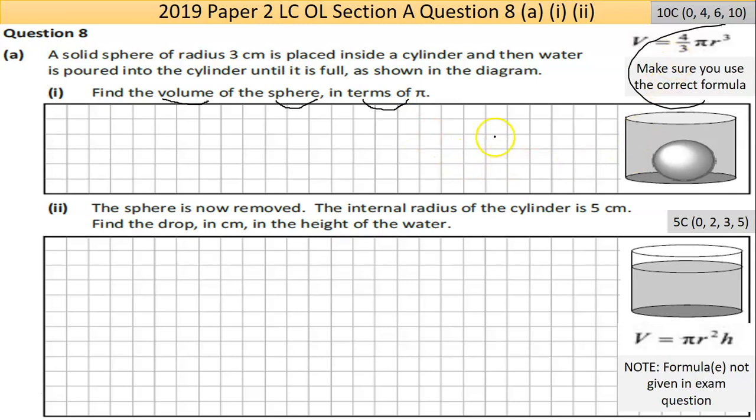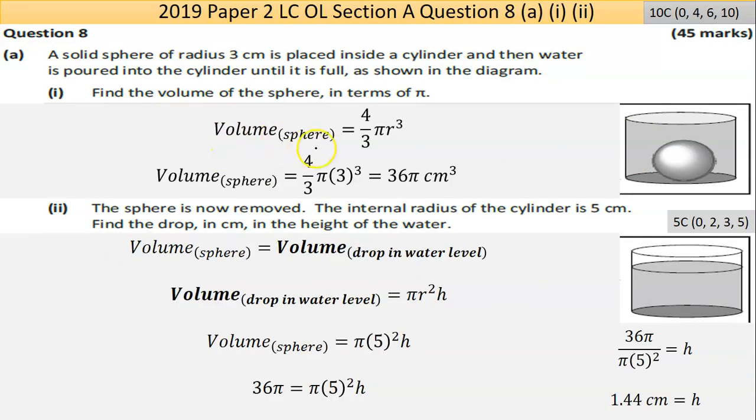We use the volume of sphere formula. The radius is 3, and that's the only input we need. Once I put it in, I multiply 4/3 times 3³, which is 27. This gives me an answer of 36π. Don't need to convert to decimal, so it's 36π cm³. A nice easy 10 marks.